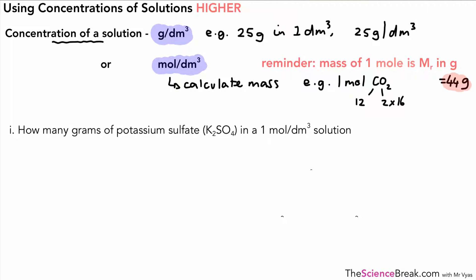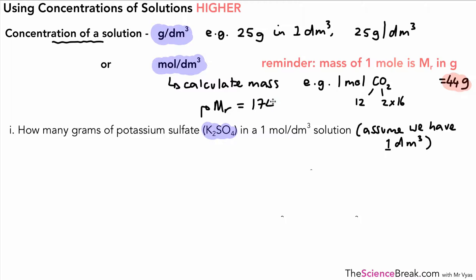Here we have a fairly straightforward question: we've got potassium sulfate and we're trying to work out how many grams are in a solution of 1 mole per decimetre cubed, assuming we have one decimetre cubed. We need to work out the formula mass for potassium sulfate — that's 174 — so one mole has a mass of 174 grams. Therefore, in that one decimetre cubed solution we have 174 grams of potassium sulfate.